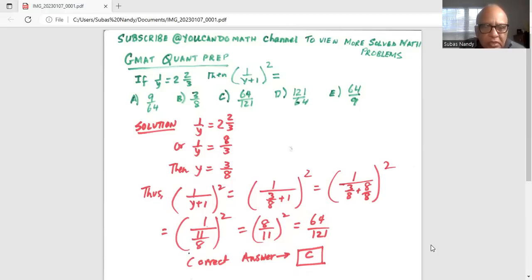Now 1 over y is equal to 2 and 2 thirds. So 1 over y is 2 times 3 which is 6 plus 2, which is 8 over 3. So y is equal to 3 over 8.